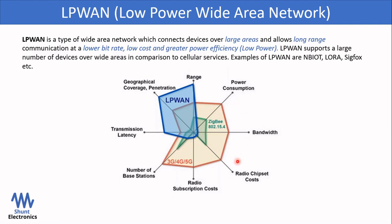The power consumption, bandwidth, radio cost, radio subscription cost, and number of base stations are quite low. The only disadvantage is transmission latency. NB-IoT inherited characteristics and advantages from LPWAN and narrowband signals, so NB-IoT can transfer data over a long range with greater power efficiency and low cost.